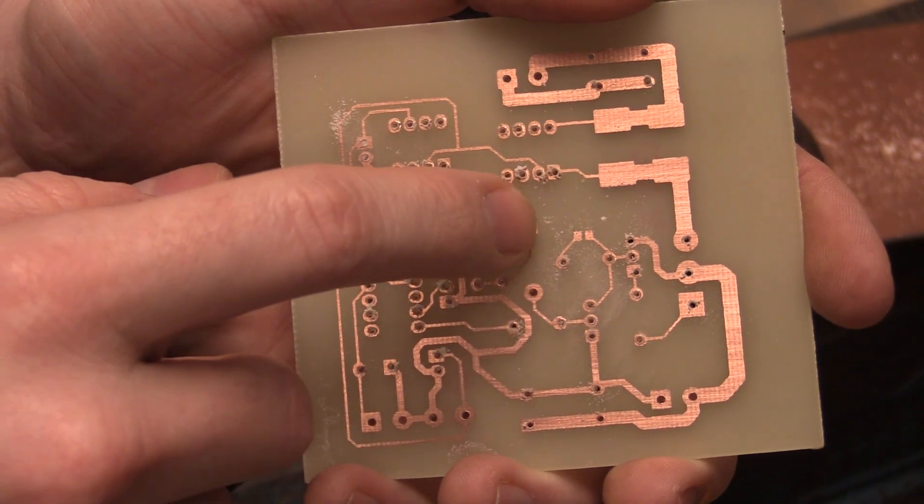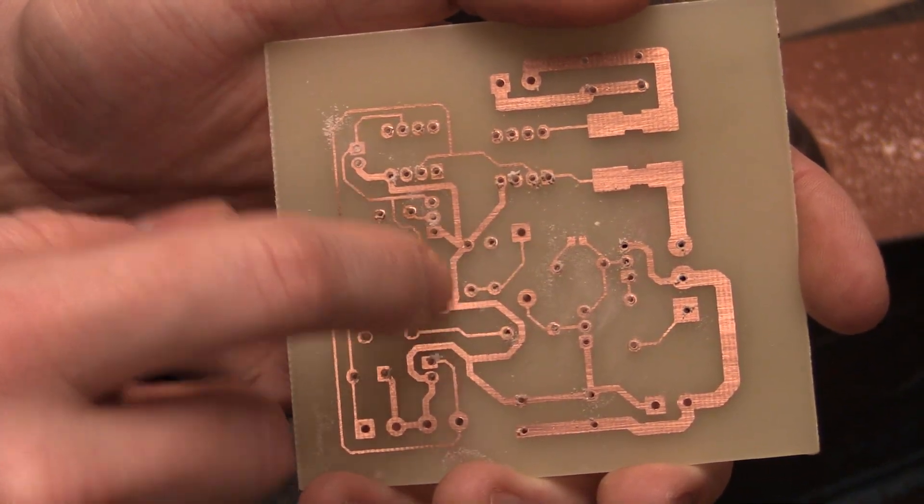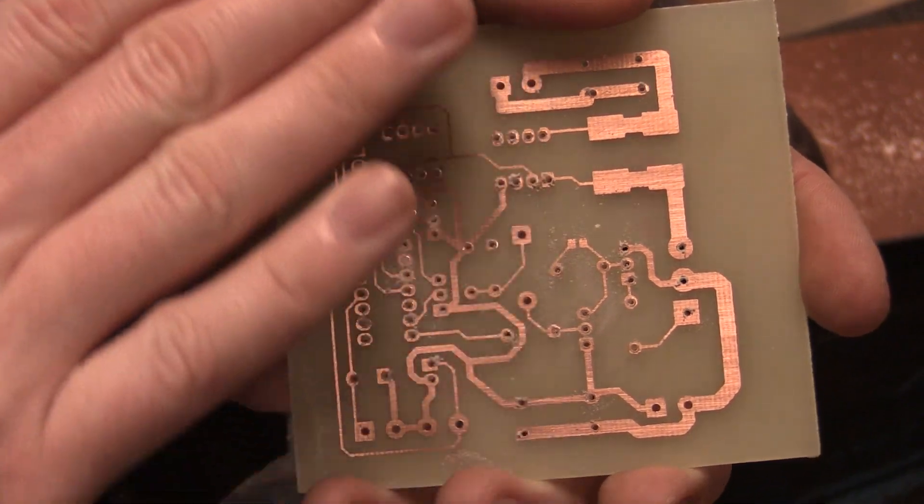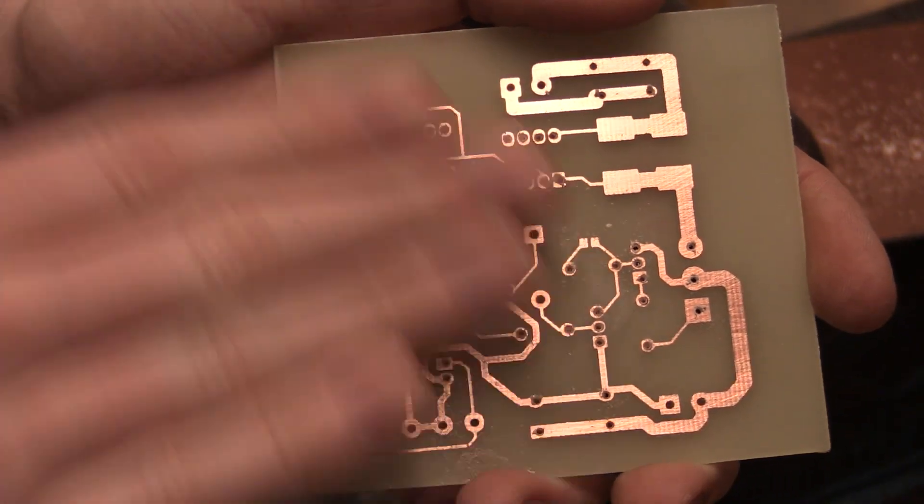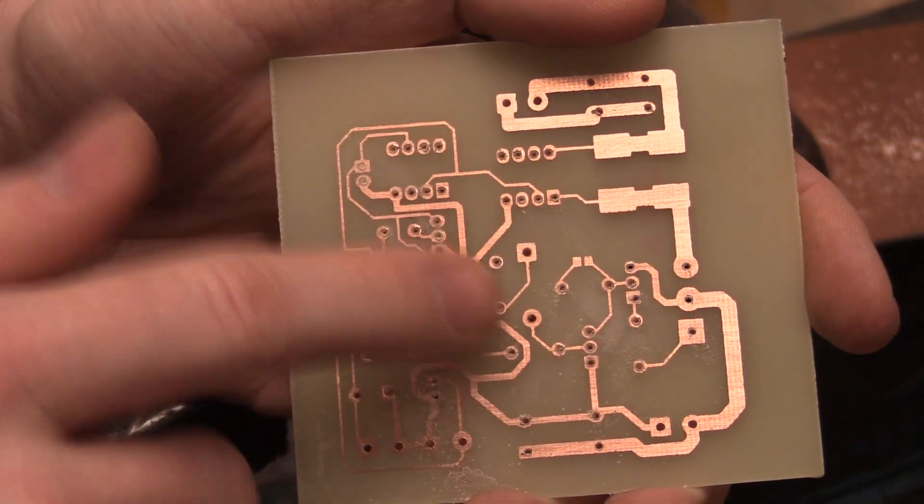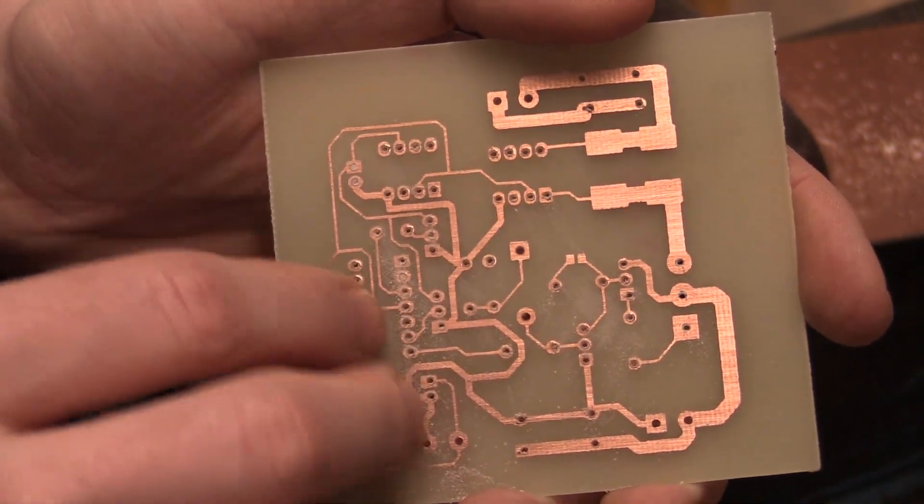If you have drilled it you will most likely have some burrs on here or raised surfaces. You can just take the sandpaper again and give it a quick sanding and that will remove that and make it much easier to solder.